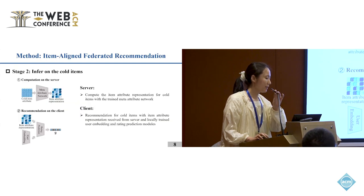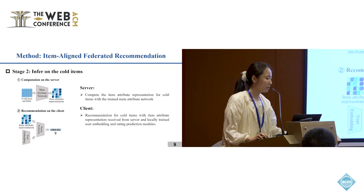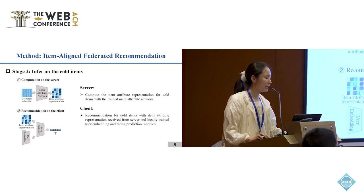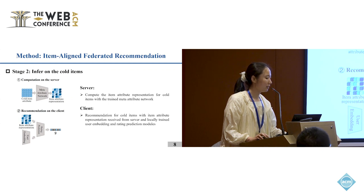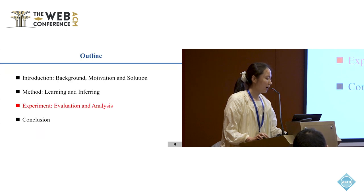For stage two, the server first computes the item attribute representation for cold items using the trained meta attribute network. Then each client recommends cold items using the item attribute representations received from the server, along with the locally trained user embedding and rating prediction modules.